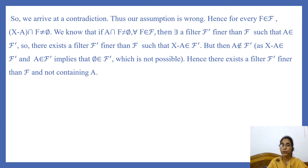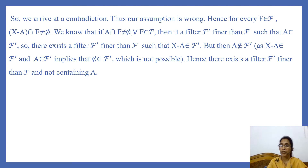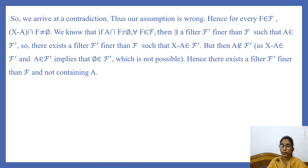Hence for every member F of filter F, complement of A intersection F is non-empty. From the theorem we just proved, if A intersection F is non-empty for each F in filter F, then there exists a filter F dash finer than F containing A. So there exists a filter F dash finer than F containing complement of A, because complement of A intersects every member of F. It follows that complement of A belongs to filter F dash, but then A doesn't belong to F dash — because if both complement of A and A were members of F dash, their intersection would be a member of F dash, that is, the empty set would belong to F dash, which is not possible. Hence there exists a filter F dash finer than F not containing set A.